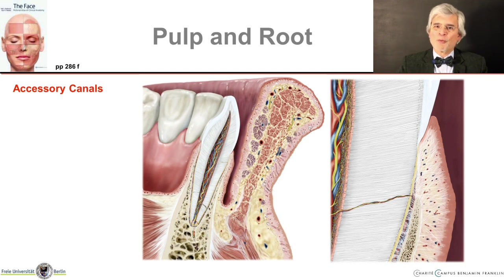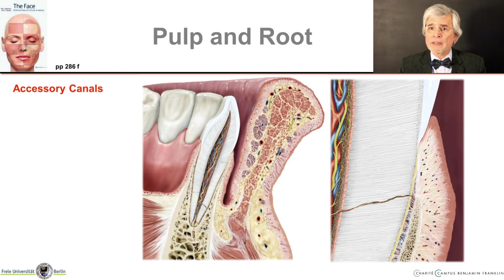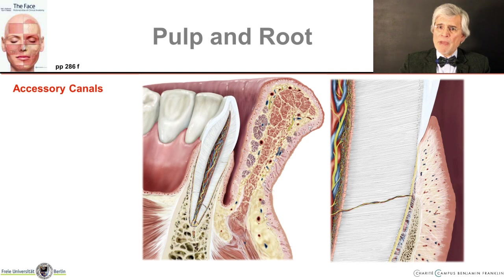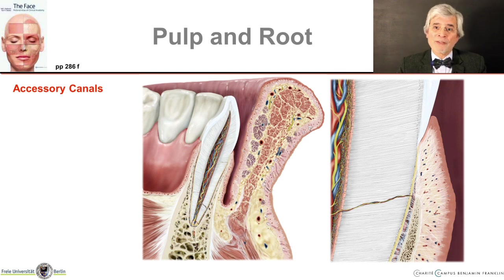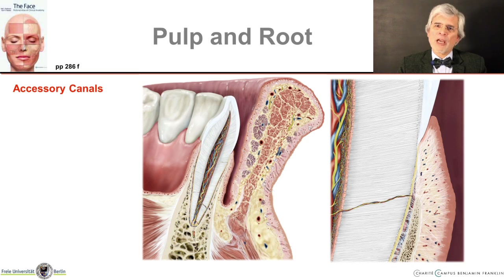The swollen blood vessels press on surrounding nerves, and you can feel it as a pulsating pain. Because of these many lateral canals connecting the pulp with the periodontal space, pulpitis can also spread as a local inflammation of the periodontal space. Conversely, anyone who has undergone orthodontic treatment may find that not only the periodontal space hurts but also the whole tooth — and now you know the context of how that works.